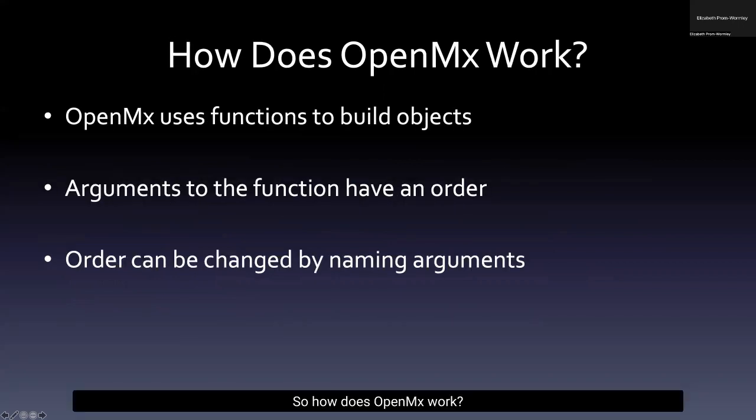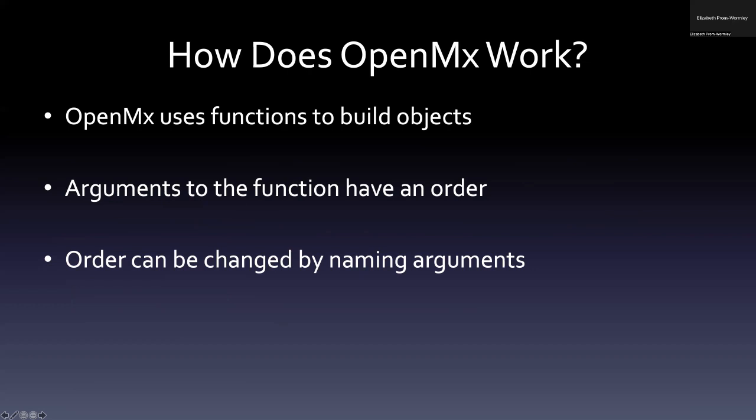How does OpenMX work? OpenMX uses several functions to build objects, and those objects are then used to produce matrices, define matrices, do matrix algebra, and produce the models that we're interested in testing. All of the arguments in the functions in OpenMX do have an order, and the order can be changed by naming arguments.